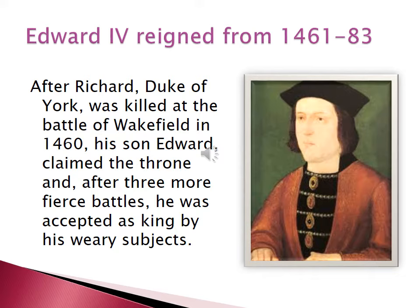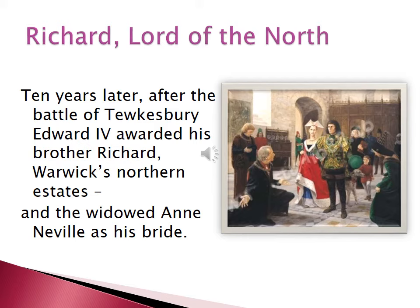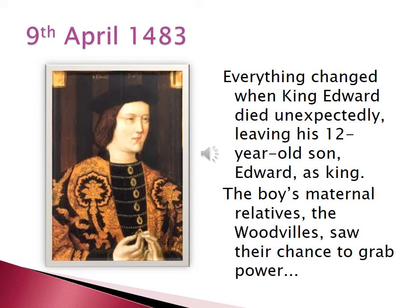After Richard, Duke of York, was killed at the Battle of Wakefield in 1460, his eldest son Edward claimed the throne of England, and after three more fierce battles was accepted as king by his weary subjects. For the next ten years, Edward's throne was still in dispute. After the Battle of Tewkesbury, Edward awarded his youngest brother Richard all Warwick's northern estates. Richard also got the widowed Anne Neville as his bride. But on the 9th of April 1483, everything changed — King Edward died unexpectedly, leaving his 12-year-old son, also Edward, as king.